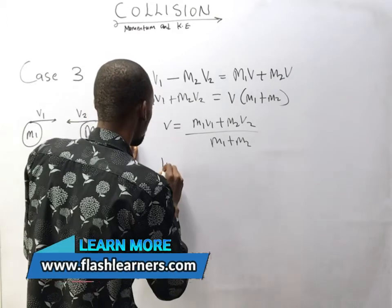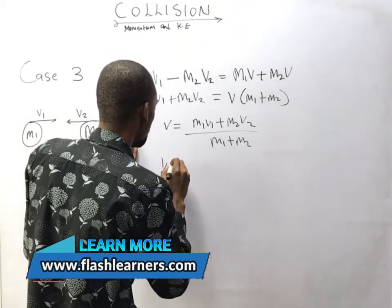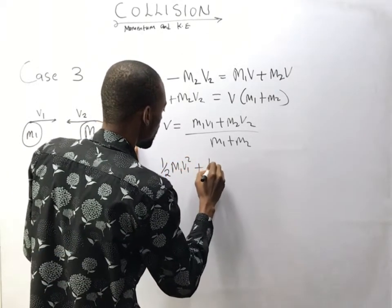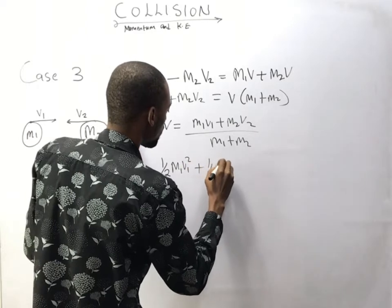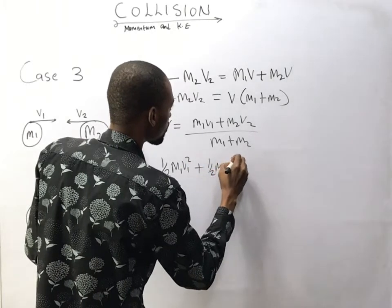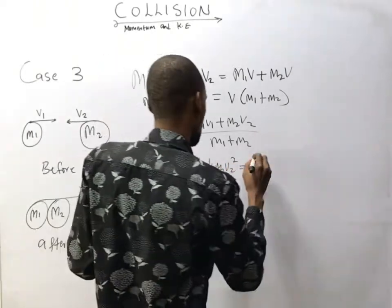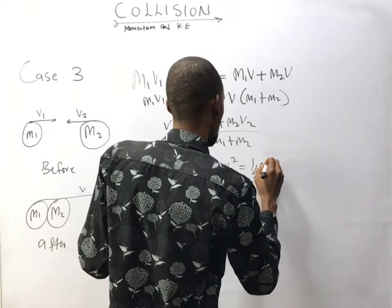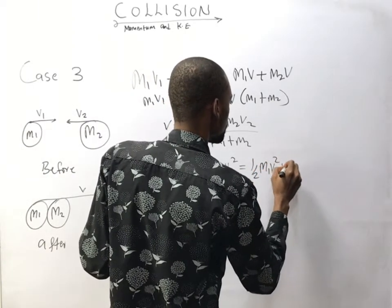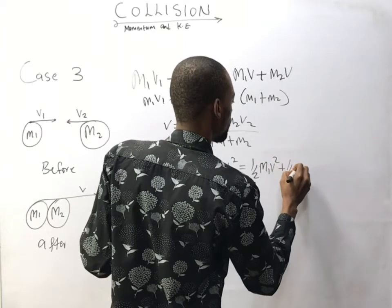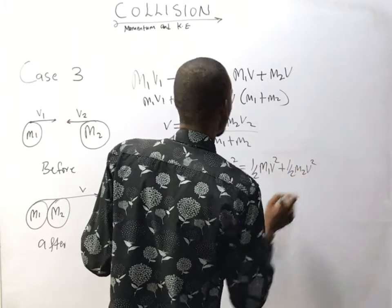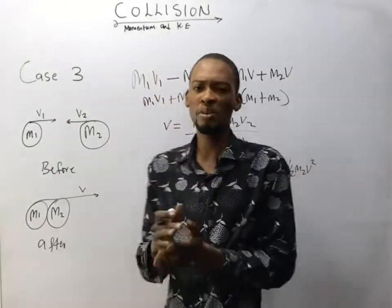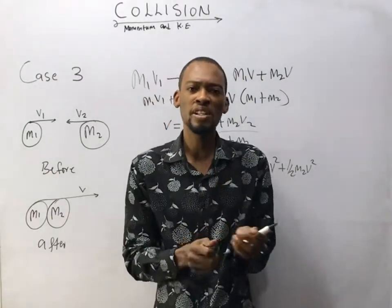For kinetic energy in Case 3: kinetic energy before collision is half m1 v1 squared plus half m2 v2 squared. After collision, kinetic energy is half (m1 plus m2) v squared, which you can simplify from there.